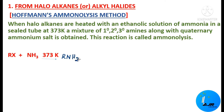One hydrogen from ammonia and the halogen combine, and HX is removed. The remaining NH2 combines with R, giving R-NH2, which is a primary amine.